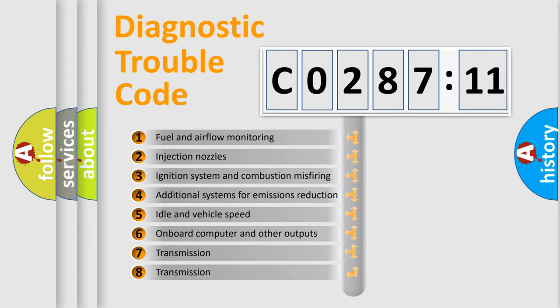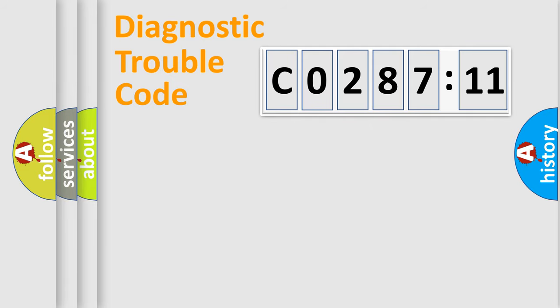The third character specifies a subset of errors. The distribution shown is valid only for the standardized DTC code. Only the last two characters define the specific fault of the group.